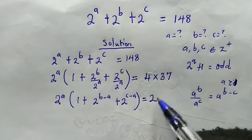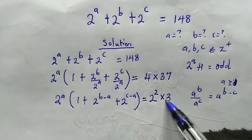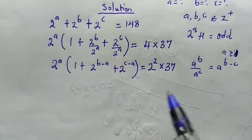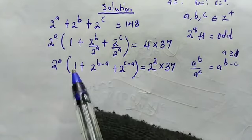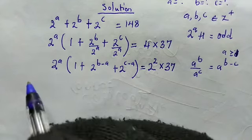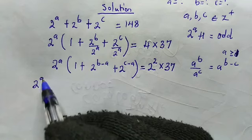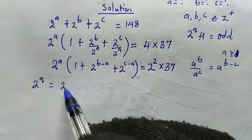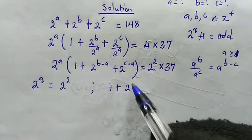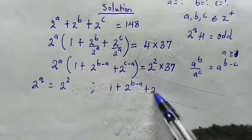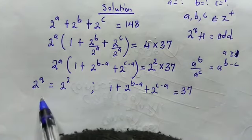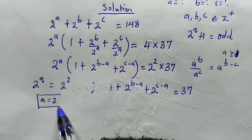We can see we have powers of 2 plus 1, so the bracketed expression must be odd. Comparing both sides, we have 2^A equals 2^2, and 1 plus 2^(B−A) plus 2^(C−A) equals 37. From here, we can clearly see that A equals 2. And that is the solution for A.